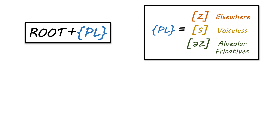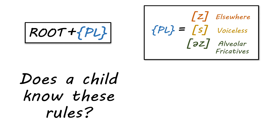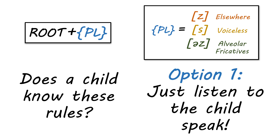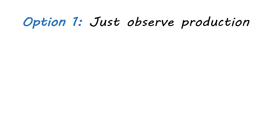So these are two rules you have to know to create regular plurals in English. There are some plurals that don't work this way, but this is how you form regular plurals. Now, what you want to know is: when does a child know these rules? One way you might think to find out is to just listen to the child speak — if the child's doing it right, they probably know the rule. But this has a big problem: you can't distinguish in regular speech whether a child knows the rule or has just memorized the plural form.